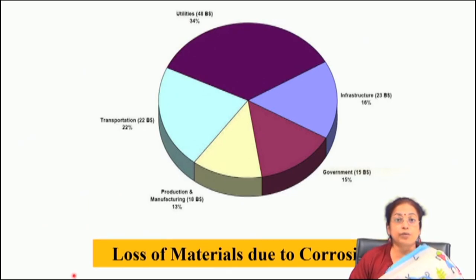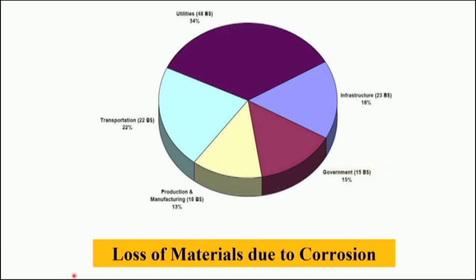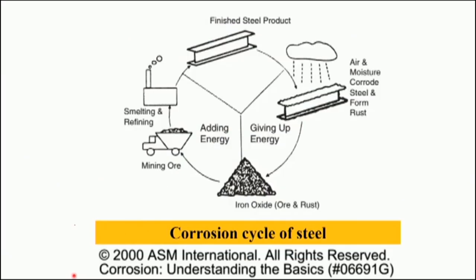If you go through the loss of materials because of corrosion, you will find that different sectors experience different types of damage. In the utility sector it is 34 percent, infrastructure 16 percent, government sector 15 percent, production and manufacturing sector 13 percent, and in transportation sector it is 22 percent. These damages usually occur in aerospace, automotive, or atomic energy sectors, and the mode of corrosion also varies to a large extent.